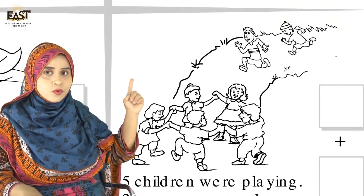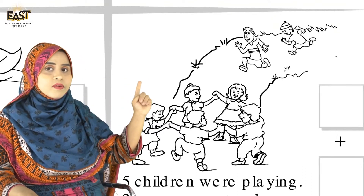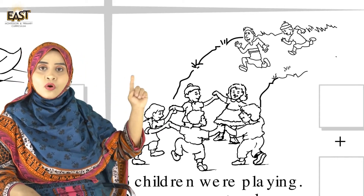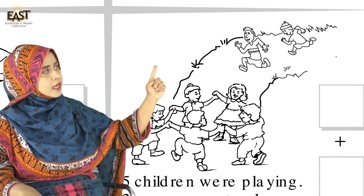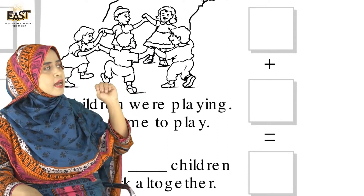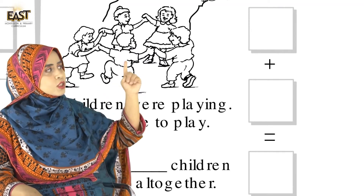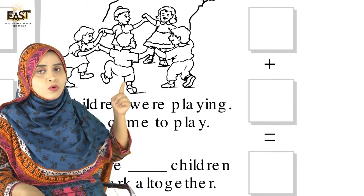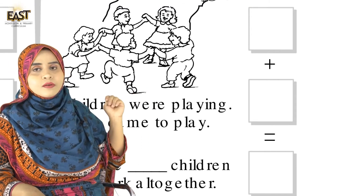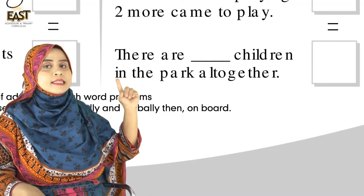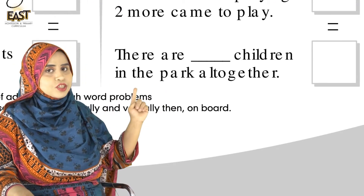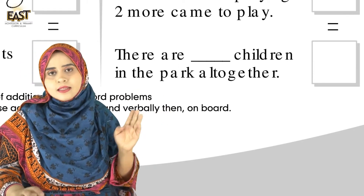Now we move to the next sum. 5 children were playing — 5 bachche khel rahe the. Two more came to play — 2 aur aagay khelne ke liye aaye. So in the first box we write 5, plus, and in the next box we write 2. When we add both: 5, 6, 7 — isn't it? So there are 7 children in the park all together.